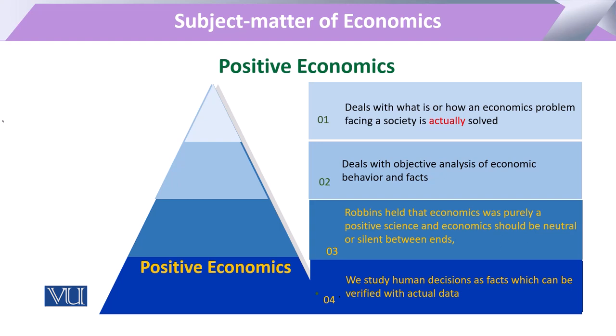Positive economics deals with the objective analysis of economic behavior. It does not deal with the subjective part — what should be. This positive economics theory was explained by Robbins, who argued that economics was purely a positive science, that economics should be neutral, and economists should be silent. Positive economics deals only with the factors of production.